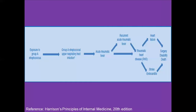This picture shows the natural history of acute rheumatic fever. After initial exposure to group A streptococcus via upper respiratory tract infection, patients can develop rheumatic heart disease. Once a patient develops rheumatic endocarditis, long-term complications can lead to disability, death, and the need for various surgeries.